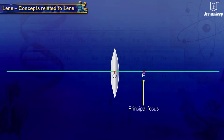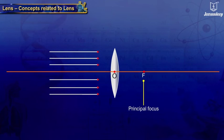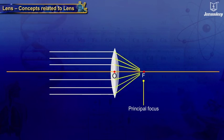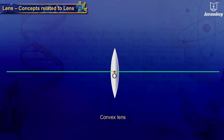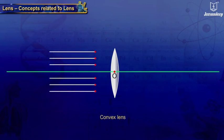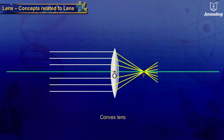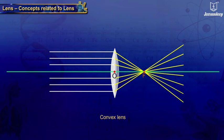The principal focus, represented by F, is the point on the principal axis where rays of light parallel to the principal axis converge, or appear to diverge from, after passing through the lens. In a convex lens, parallel rays converge at the focus. A convex lens has two principal foci, F1 and F2.